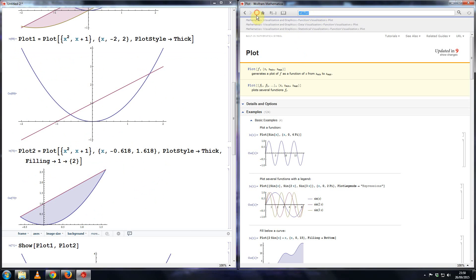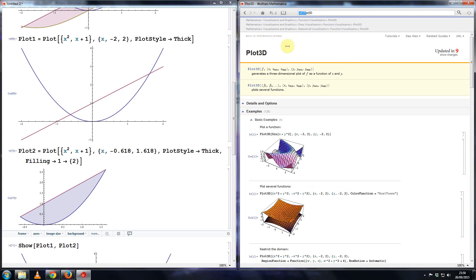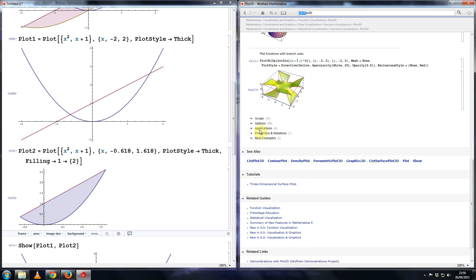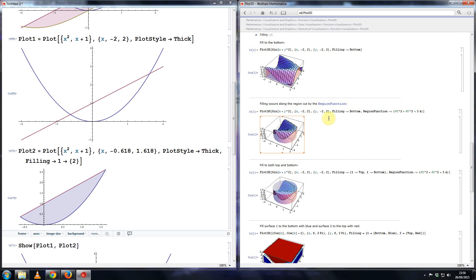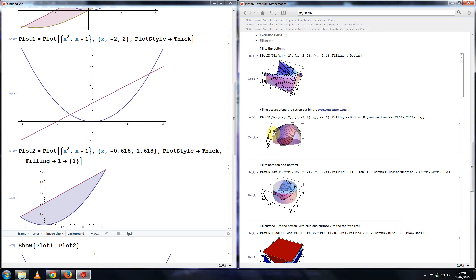And if any of you also do three dimensional plots, so using the plot three D function, then you can use the filling option to shape the space between a three dimensional plot as well. So that's filling there. So you can produce something like this, for instance. And that's it.